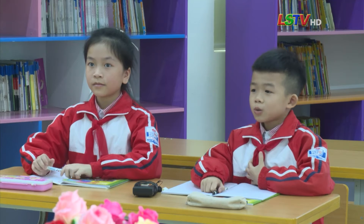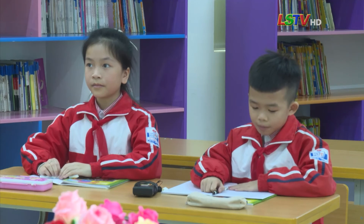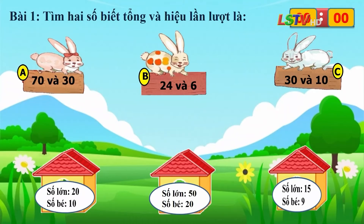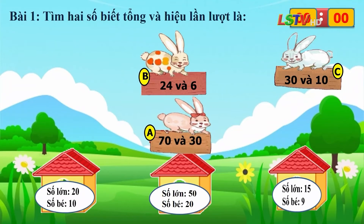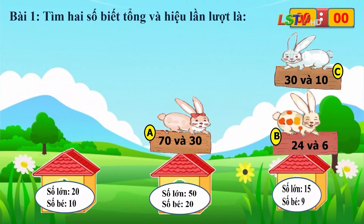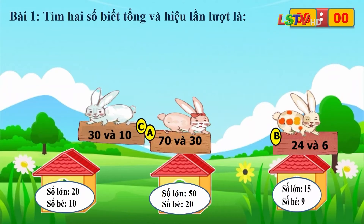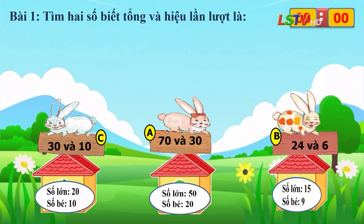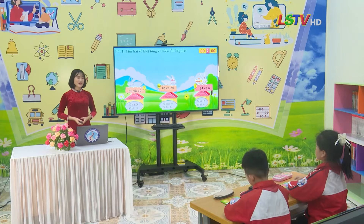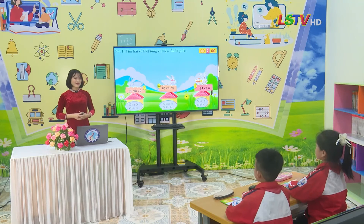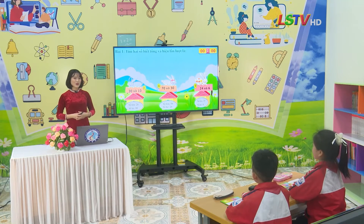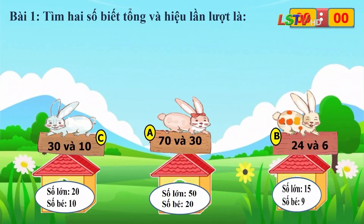Thưa cô, chuồng thỏ A ghi số lớn là 50, số bé là 20. Chuồng thỏ B ghi số lớn là 15, số bé là 9. Chuồng thỏ C ghi số lớn là 20, số bé là 10. Bài làm của bạn thật chính xác đúng không nào? Vậy là các chú thỏ đã tìm được đúng chuồng của mình rồi. Các em đã làm bài tập 1 rất tốt.